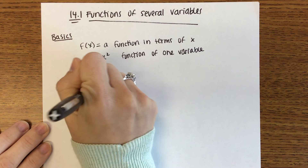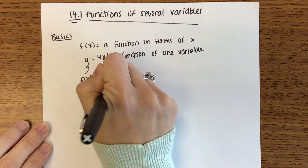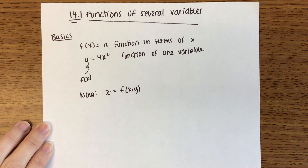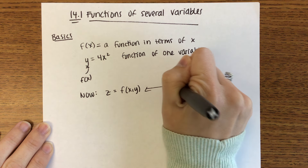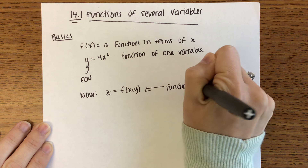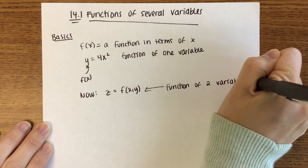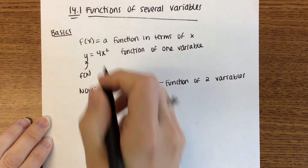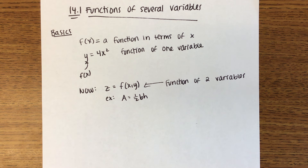What we're going to do now, which I think you've not seen before, is z is going to be a function of x and y — a function of two variables. Some examples: the area of a triangle is one-half base times height. That's a function of two variables. Area is a function of the base and the height.